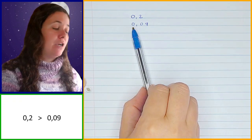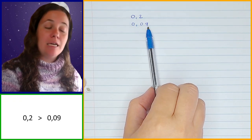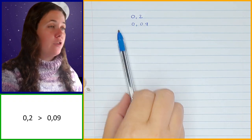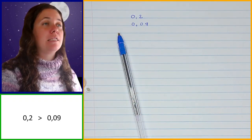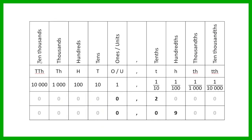Ones have a greater value than tenths. Tenths have a greater value than hundredths. And if I move further this way, let's just have a look at this table over here: ten thousands is greater than thousands, thousands is greater than hundreds, hundreds is greater than tens, tens is greater than ones, ones is greater than tenths, tenths is greater than hundredths. So as we move further to the left the value gets greater, and as we move further to the right the value gets less.